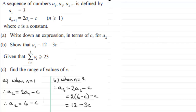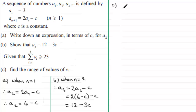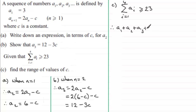Now for part c, we're given that the sum of ai for i going from 1 to 4 — the sum of the first four terms — is greater than or equal to 23. We need to find the range of values of c. This means a1 plus a2 plus a3 plus a4 is greater than or equal to 23.